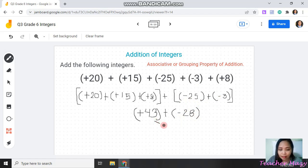Next is let's add these integers with unlike sign. We have positive 43 plus negative 28. 43 minus 28 is equal to 15. And you need to observe which integer has bigger absolute value. This one is 43 and the other one is 28. This one is bigger, so the sum is positive.